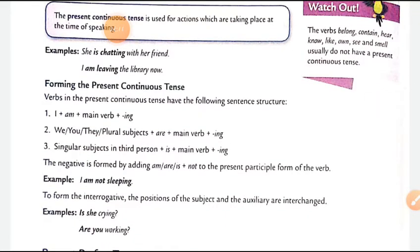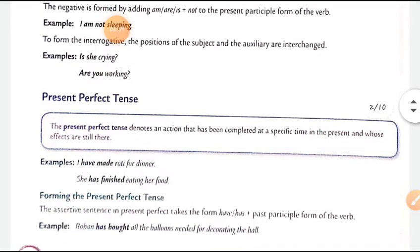Forming the present continuous tense: verb mein 'ing' add karna hota hai. With 'I', we use 'am' + main verb + ing. With 'we/you/they' (plural subjects), we use 'are' + main verb + ing. For singular subjects in third person, we use 'is' + main verb + ing. The negative is formed by adding 'not' after 'am/is/are'. For example: 'She is crying' becomes 'She is not crying'. For interrogative: 'Are you crying?'